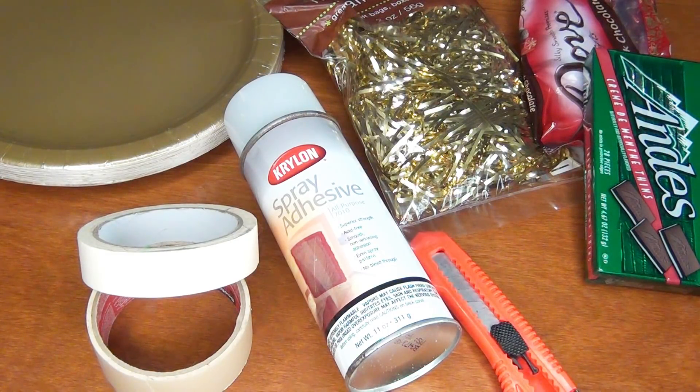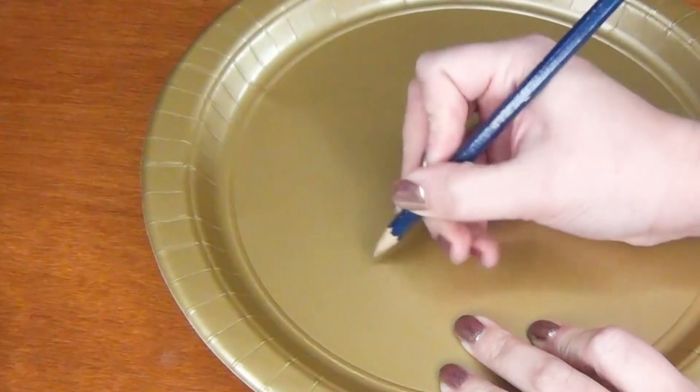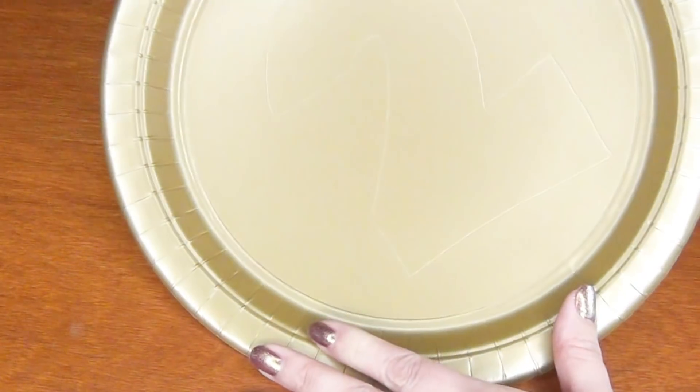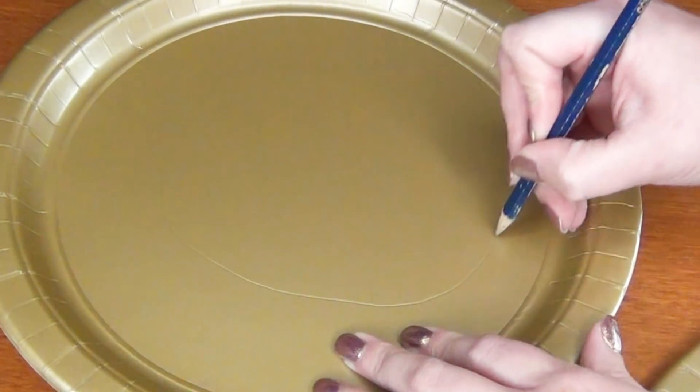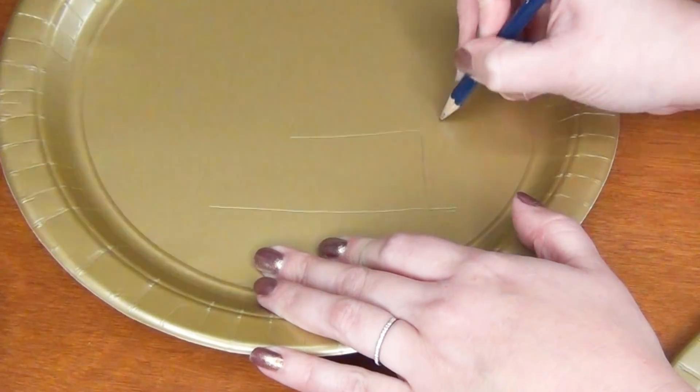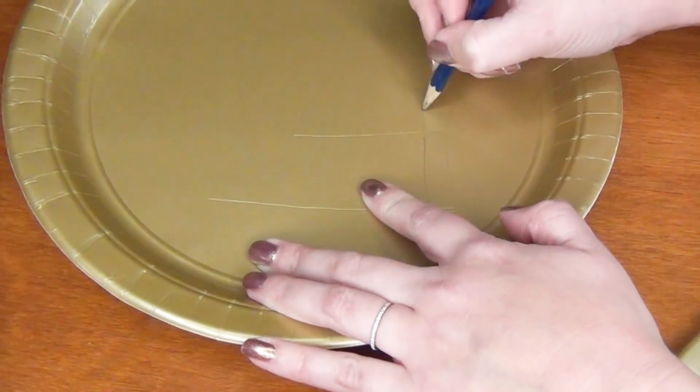Begin by drawing out each of your numbers using your pencil on the front of your gold plates. This is going to serve more as a guide of where you're going to bend the edges of your numbers rather than where you're going to cut them.